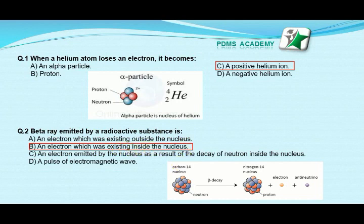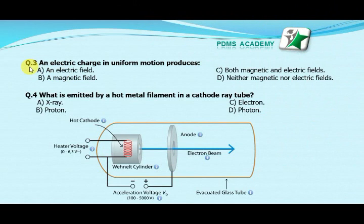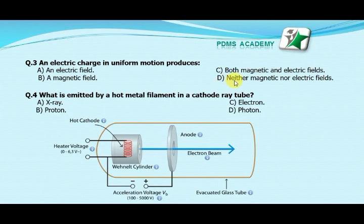Our next MCQ is: an electric charge in uniform motion produces — option A: an electric field, option B: a magnetic field, option C: both magnetic and electric field, option D: neither magnetic nor electric field. Our correct answer is C: both magnetic and electric field.